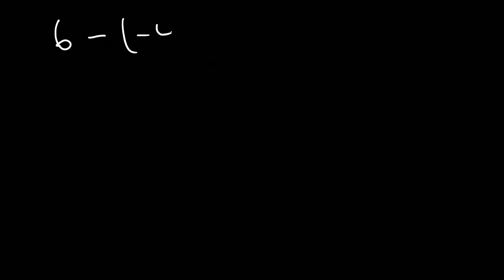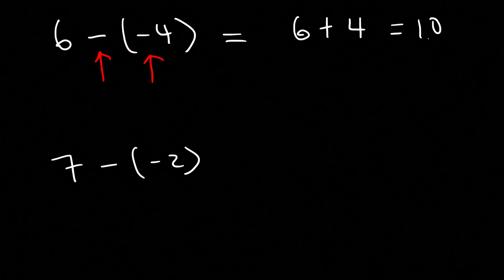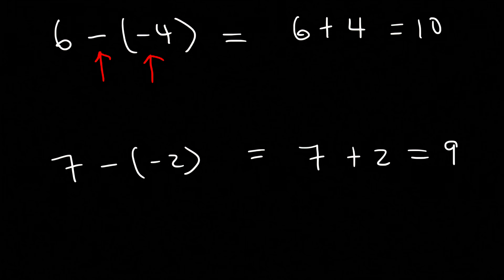What is 6 minus negative 4, and what is 7 minus negative 2? Whenever you have two negative signs next to each other, you can make them equal to a positive sign. So 6 minus negative 4 is the same as 6 plus 4, which is 10. And 7 minus negative 2 is 7 plus 2, which is 9.